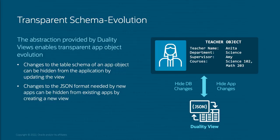JSON duality also enables transparent schema evolution. If you change the underlying table schema used to implement the app object, you can hide that from the application by just creating a new duality view on top of the new schema format. You can also change the JSON format — if a new app requires a variant of the JSON format, you can create a new duality view for that new application and leave the old one for the old application. So you don't break old applications and don't have to modify them at all. It enables schema evolution much more simply.